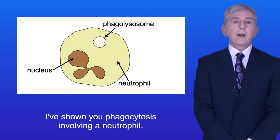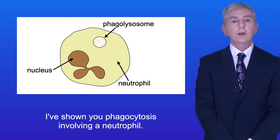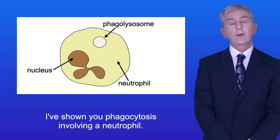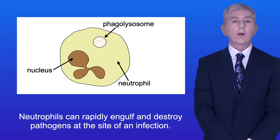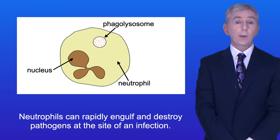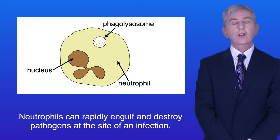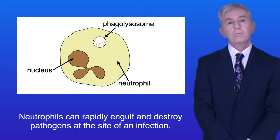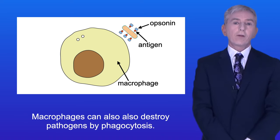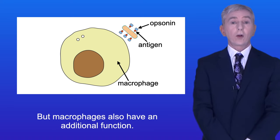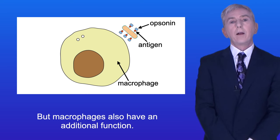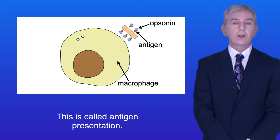Neutrophils can rapidly engulf and destroy pathogens at the site of an infection. Macrophages can also destroy pathogens by phagocytosis but macrophages also have an additional function called antigen presentation.